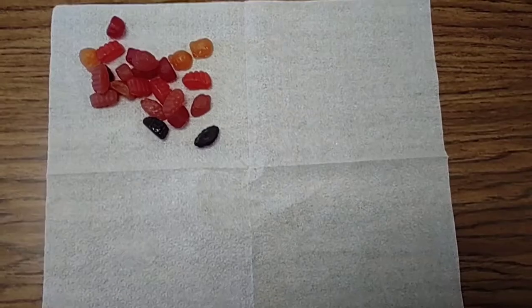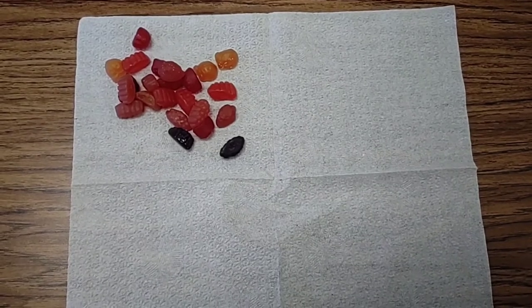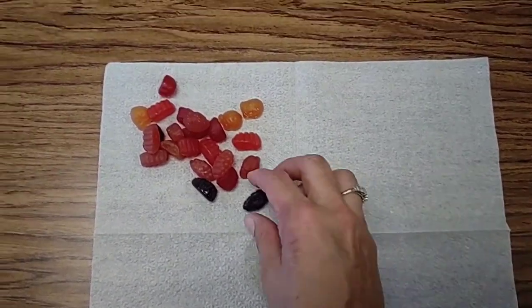How about an array using gummies? Let's do six times two. That would mean we need six rows of two.